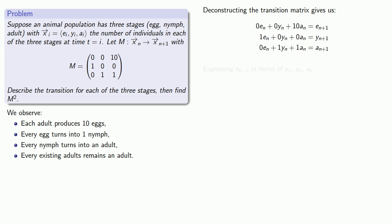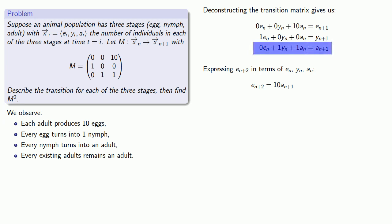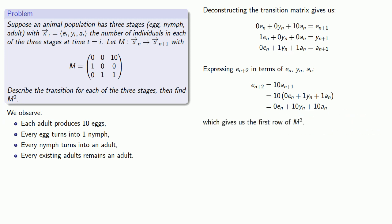The number of eggs at time n+2 is 10 times the number of adults at the previous point in time, so that's 10 times a_{n+1}. I know that a_{n+1} equals 0·e_n + 1·y_n + 1·a_n, so I substitute that in. This gives me the number of eggs at time n+2 in terms of eggs, nymphs, and adults at time n — and this is the first row of M squared.